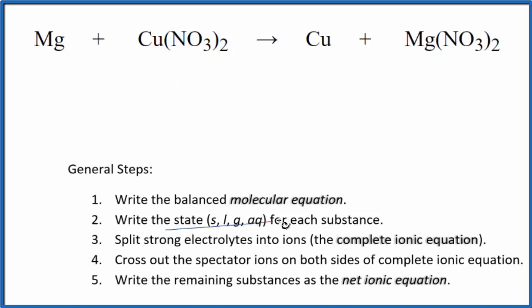Then we need to write the state for each substance. Magnesium, that's a metal, so it'll be a solid. If you know your solubility rules, nitrates are very soluble, so that's going to be aqueous strong electrolyte to dissociate into its ions when we put it in water. Copper is a metal, and then we have magnesium nitrate, very soluble, aqueous.